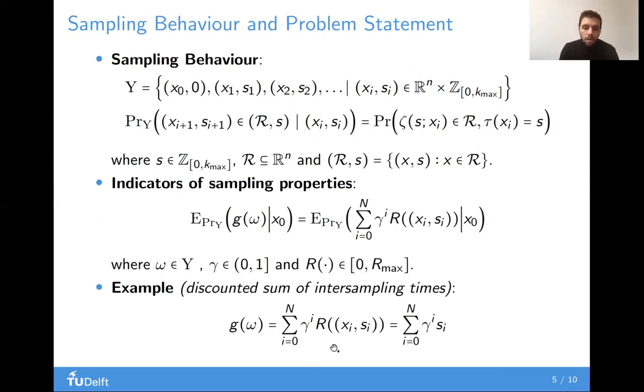However, to demonstrate expressivity of cumulative rewards, consider this example, where the reward of x_i, s_i is just s_i, the inter-sampling time. Then what you get as an indicator is the expected discounted sum of inter-sampling times, which definitely provides an idea of how fast the system is expected to sample.